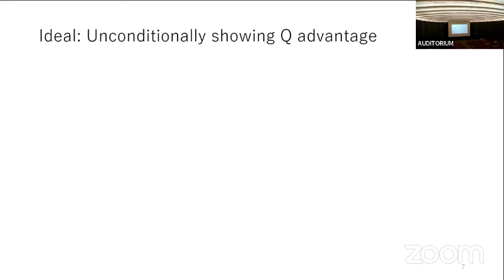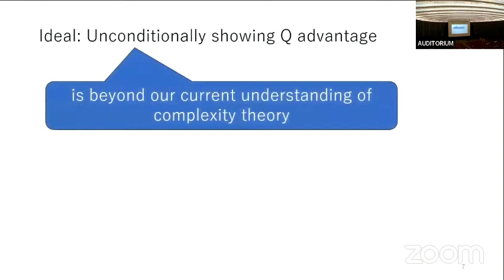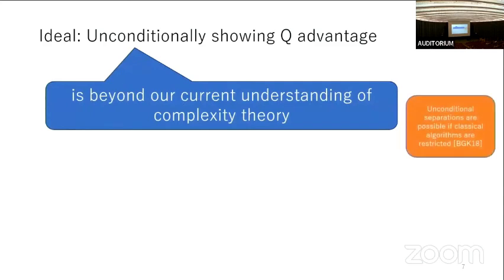Ideally we want to show the existence of quantum advantage unconditionally, without any assumption, but this is extremely difficult and beyond our current understanding of complexity. There are some unconditional separations between quantum and classical, but these results are restricted to classical computation of constant depth or log depth. Here we are interested in any general efficient classical computation, and in this case unconditional separation is highly non-trivial and we don't know how to do that.